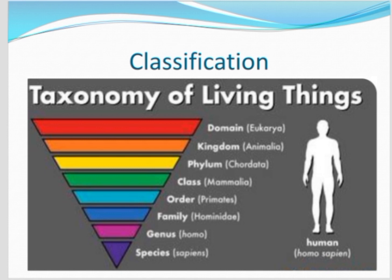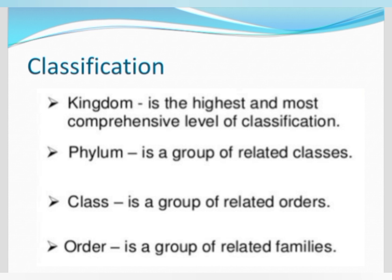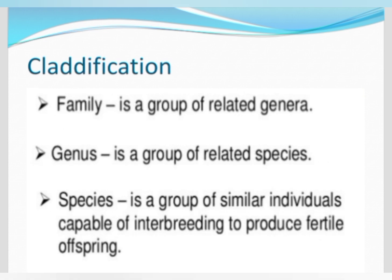The classification of living organisms uses many taxons: domain, kingdom, phylum, class, order, family, genus, and species. Taking Homo sapiens — humans — as an example: kingdom is the highest and most comprehensive level of classification. Phylum is used in animals, and division in plants. Class is a group of related orders, order is a group of related families, family is a group of related genera, genus is a group of related species. Species is a group of similar individuals capable of interbreeding to produce fertile offspring — the lowest taxon in classification.